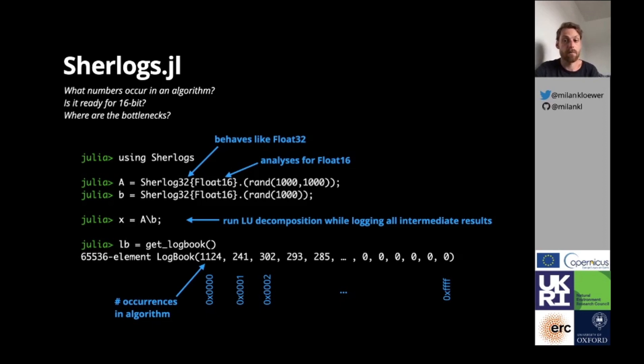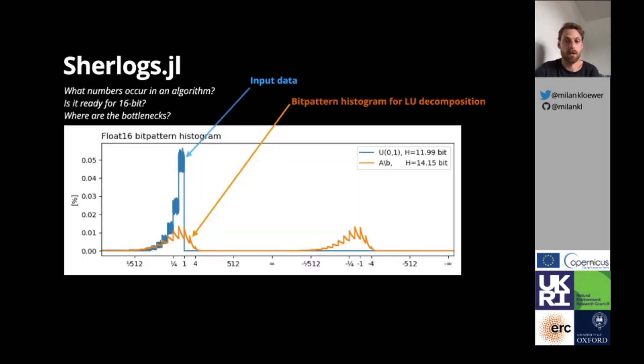We can understand the bit-pattern histogram by plotting it. The histogram has all the bits from hexadecimal 0000 to ffff on the x-axis, but relabeled with their respective meaning as Float16. The histogram of input data, here given in blue, suggests that we actually don't need 4 of the 16 bits, as its entropy is only 12 bit.